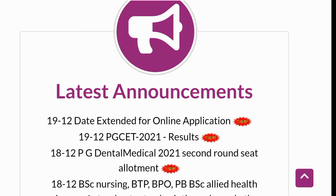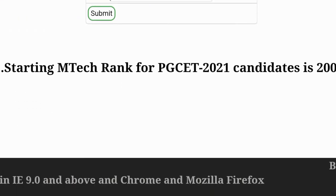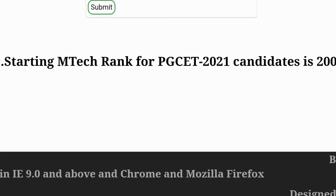You can click on the results on the page — open the Karnataka Examination Authority PGCET Common Entrance 2021 page, click the results, enter your details, and submit.